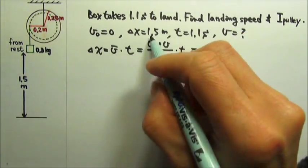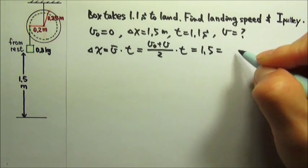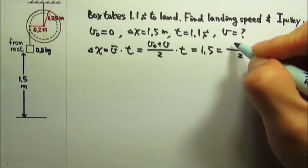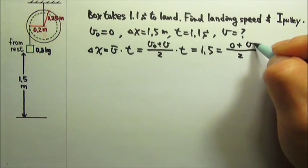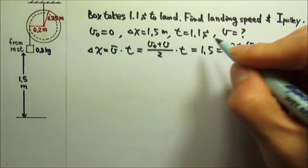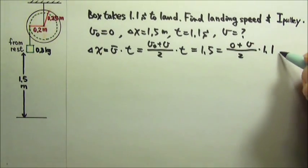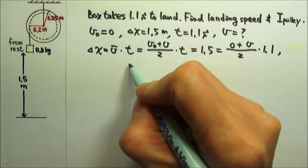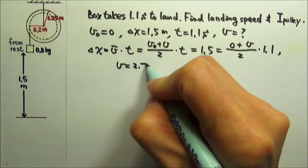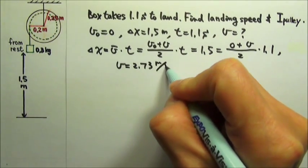So the Δx of 1.5 equals the average velocity, the initial plus the final divided by 2, times the time 1.1. So the final velocity, the landing speed, is 2.73 meters per second.